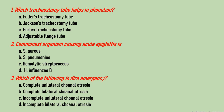Question number 3: which of the following is a dire emergency? Options are complete unilateral choanal atresia, complete bilateral choanal atresia, incomplete unilateral choanal atresia, and incomplete bilateral choanal atresia. As you know, children are obligate nasal breathers. Therefore, when there is complete bilateral choanal atresia, the child or infant cannot breathe and can die. Complete unilateral choanal atresia does not lead to any problem, although it leads to unilateral nasal obstruction.